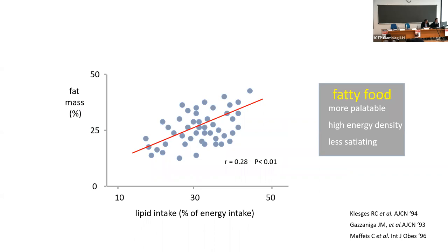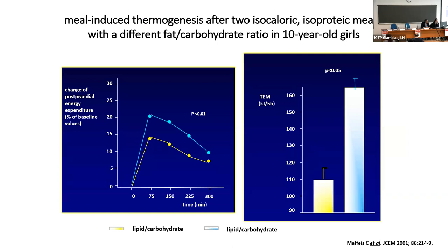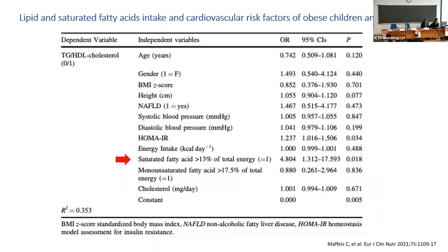Why does fat intake promote fat accumulation? There is a strong relationship between dietary fat intake and fat mass. Fatty food is more palatable, has high energy density, and is less satiating per gram compared to protein and carbohydrates. Additionally, fat intake is associated with reduced diet-induced thermogenesis — when your meal has a higher concentration of fat, the thermogenesis induced by food intake is significantly lower than with a meal of the same energy and protein but a lower proportion of fat.